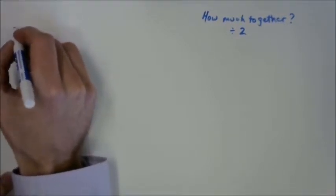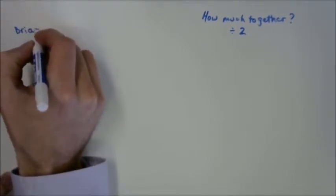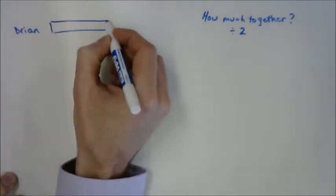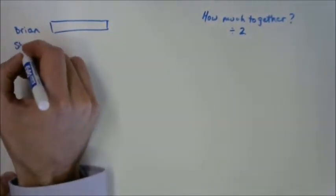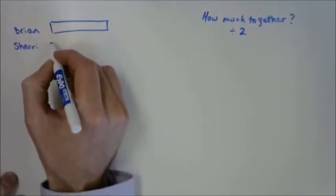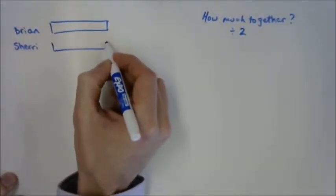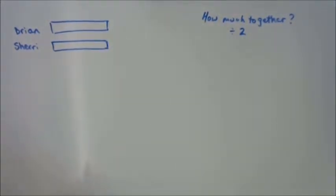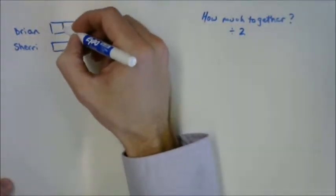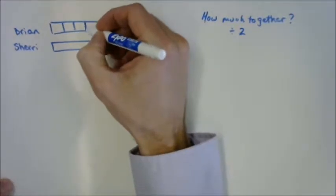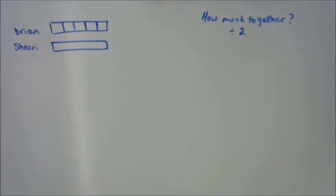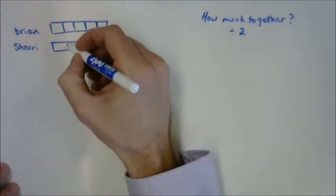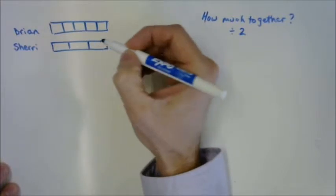Let's draw Brian's chocolate bar and let's draw Sherry's chocolate bar. Go ahead and use your space wisely — think about organizing it. They have the exact same chocolate bar. How many parts does Brian's chocolate bar get split into? Five — so try to do five as equally as you can. And how many parts does Sherry's chocolate bar get split into? Three. So we've got three pieces.